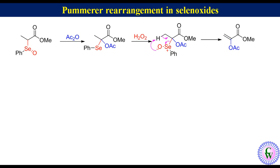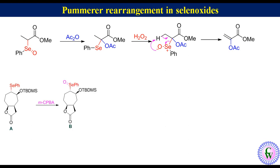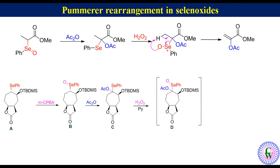Let's have another example in which compound A with a phenyl selenyl group is treated with MCPBA to get selenoxide analog B, which when treated with acetic anhydride undergoes Pummerer reaction to produce compound C with a phenyl selenyl group. Compound C when treated with hydrogen peroxide in the presence of pyridine produces non-isolable compound D with a selenoxide group, which undergoes elimination to give product E.